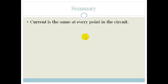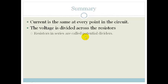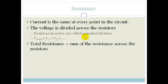So let's summarize. First of all the current is the same at every point in the circuit. But the voltage is divided across the resistors. So the resistors in series are called potential dividers. Ok, so V total is equal to V1 plus V2. So the total resistance can be calculated as the sum of the resistance across the resistors. Why? I didn't mention this but it's obvious. Since the electrons are all going through every single resistor, it makes sense that the total resistance is going to be R1 plus R2. The little subscript there stands for resistors in series.